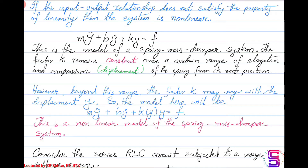If you stretch the spring beyond a certain range, then k may change and might start depending on the amount of elongation the spring has undergone. Hence, the model which was linear will now be represented as m·ÿ + b·ẏ + k(y)·y = f. This otherwise linear model, when outside a certain range of operation, can behave as a non-linear system — this is the possibly non-linear model of a spring-mass-damper system.